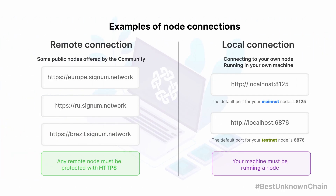If you would like to connect to a remote node, you can just pick any of the nodes available on the list. As a security measure, if you are going to connect to a remote node, the remote node must be protected with HTTPS. If you want to connect to a local node you are running, you need to make sure that your node is running and fully synced. You can connect to a local node by connecting to localhost. The default port for mainnet is 8125, and the default port for testnet is 6876.